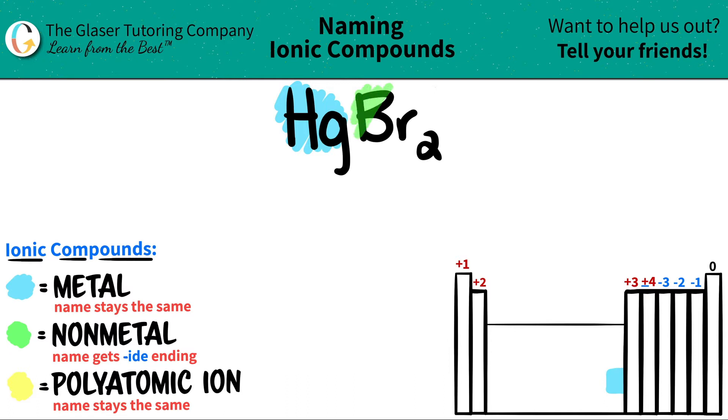And bromine, since Br is a halogen, the halogens are always a nonmetal. So bromine is over here on the periodic table. That's a nonmetal.